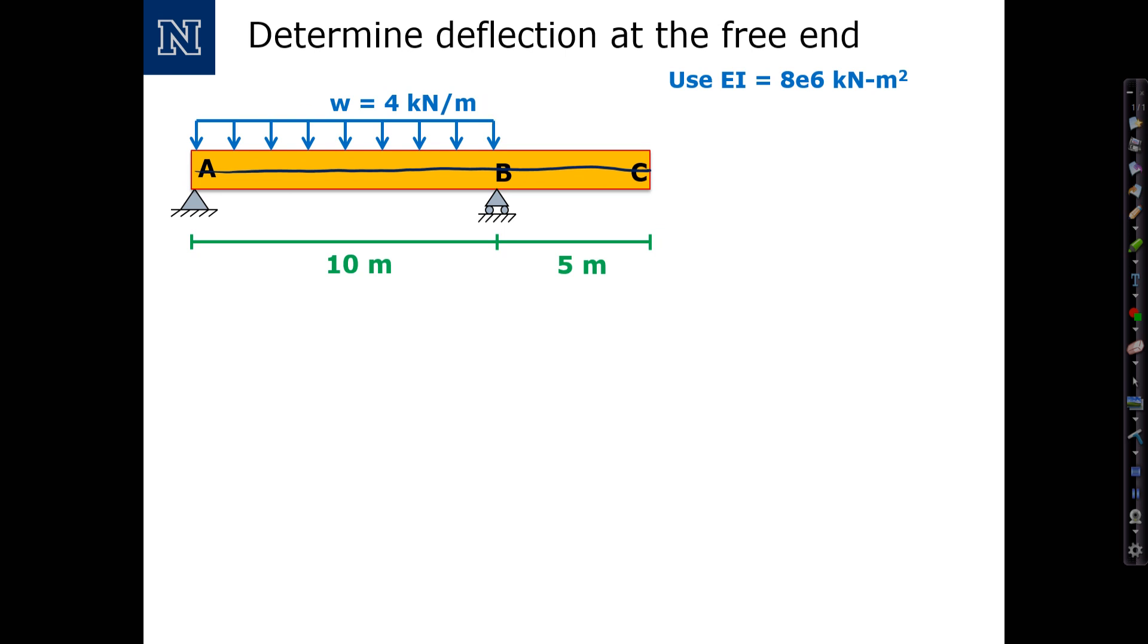I know that the distributed load is going to push the beam down between supports A and B, and because the loading is symmetric, I expect that the deflected shape will be symmetric between those two points.